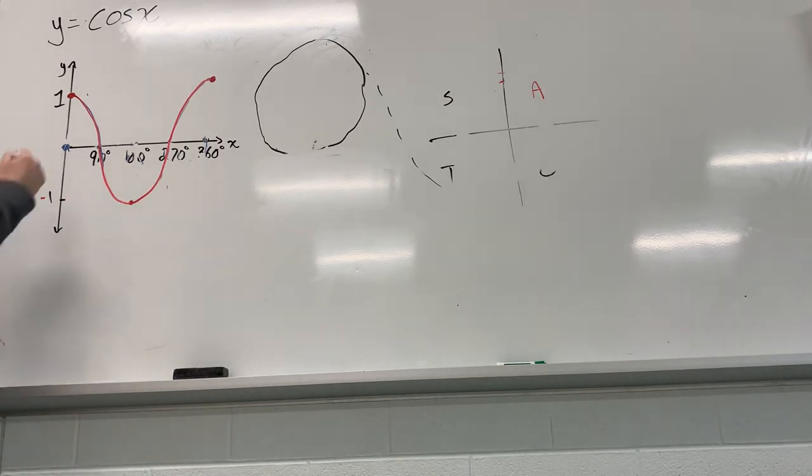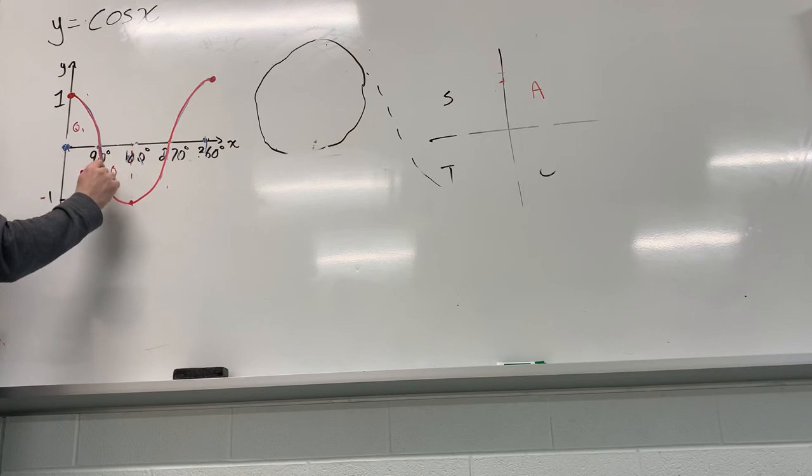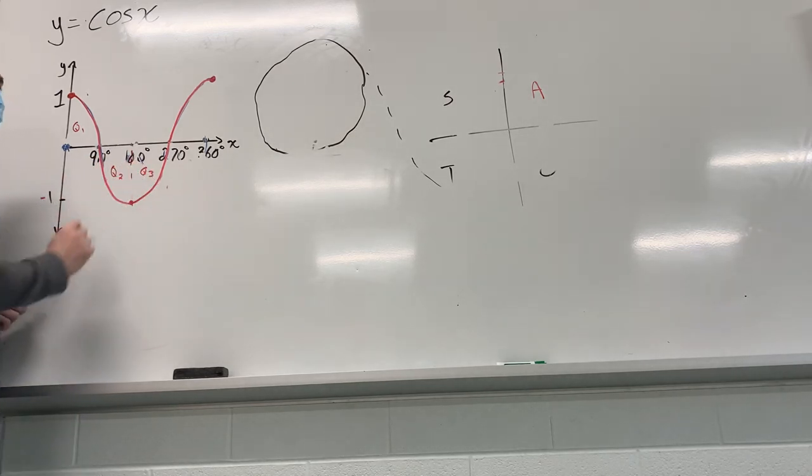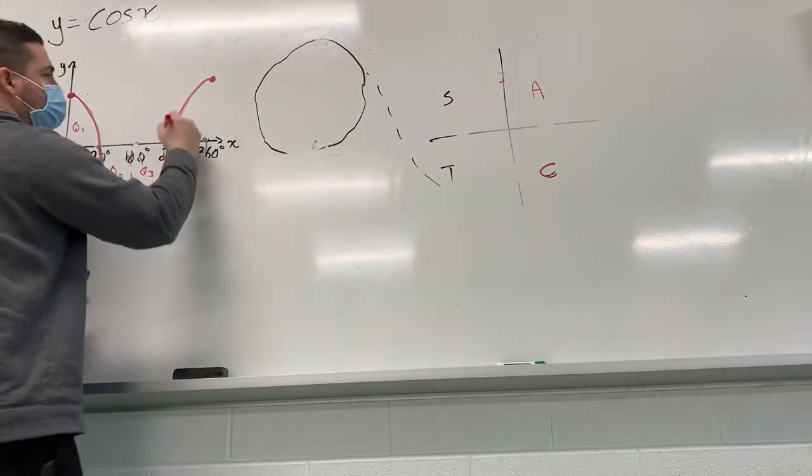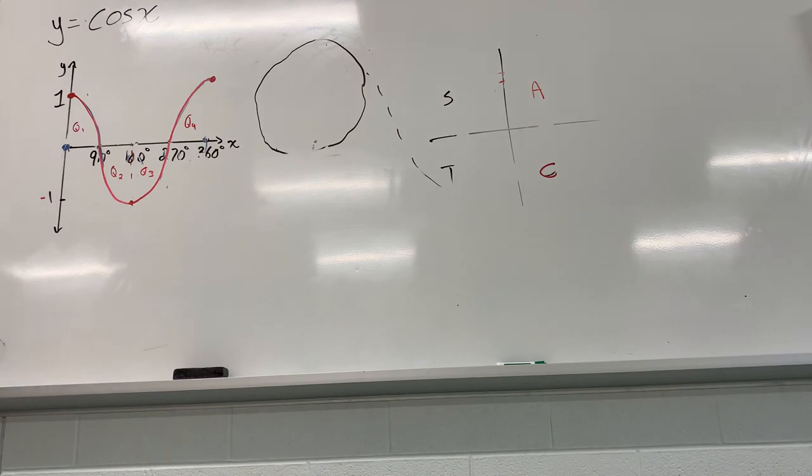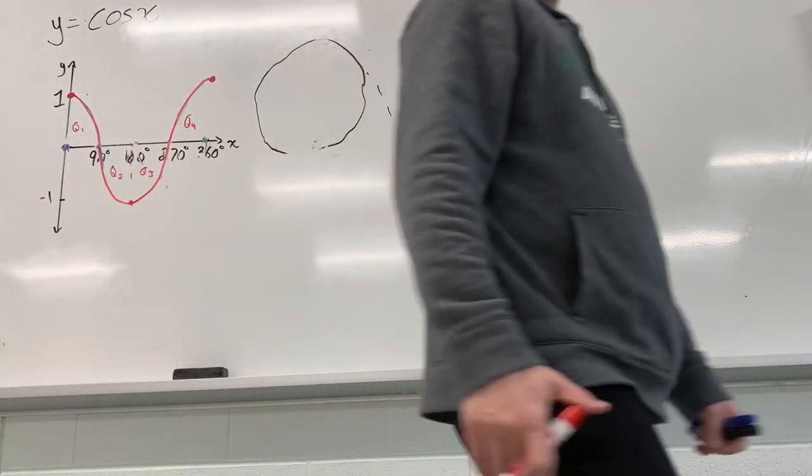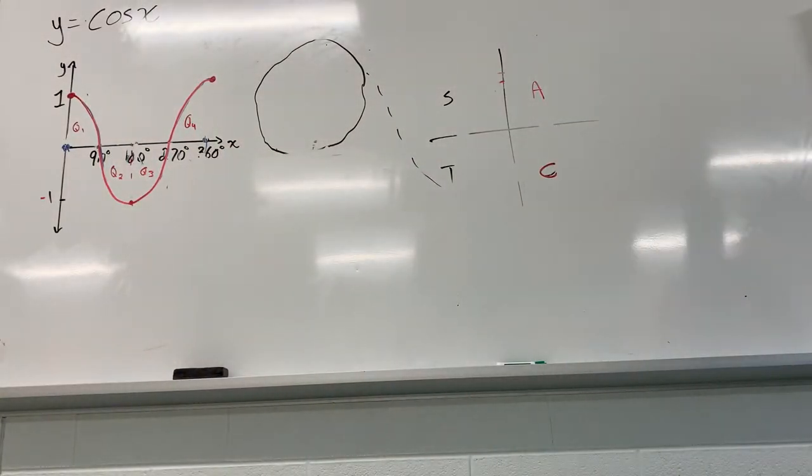And again, think about the quadrant, so this is quadrant 1, where cosine is positive. Quadrant 2, cosine is negative. Quadrant 3, it's still negative. But then in quadrant 4, cosine is now positive. Quadrant 3, it's still negative. Okay?